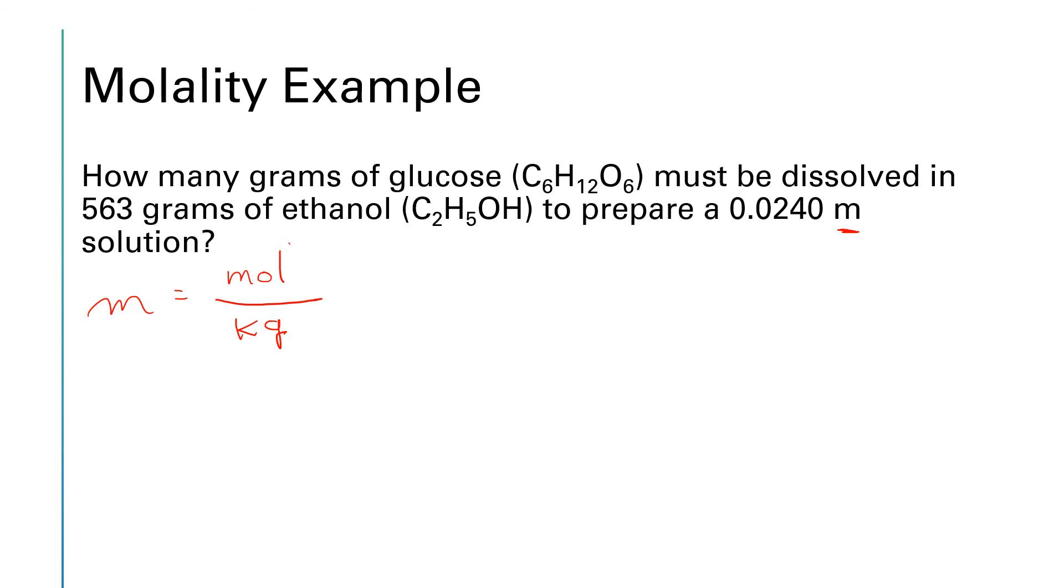We are looking for our solute, how many moles that would be. For our solvent, we are given 563 grams, and let's go ahead and convert that to kilograms and move that decimal three spots to the left. So it'll be 0.563 kilograms of ethanol, which is our solvent.